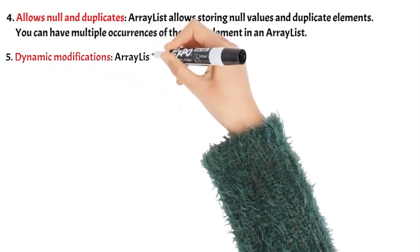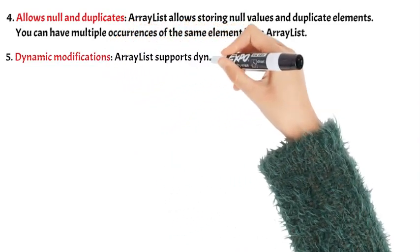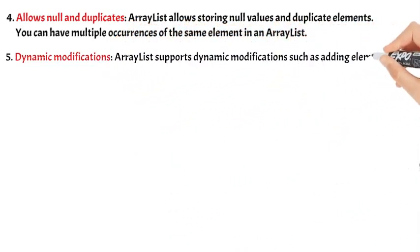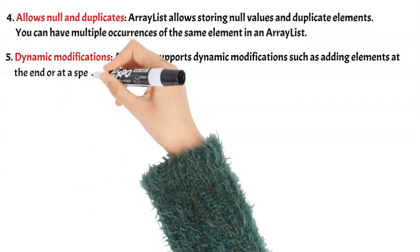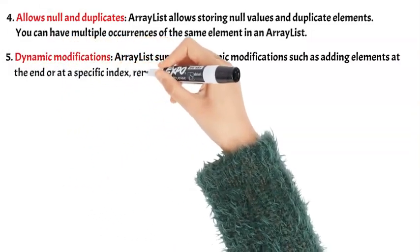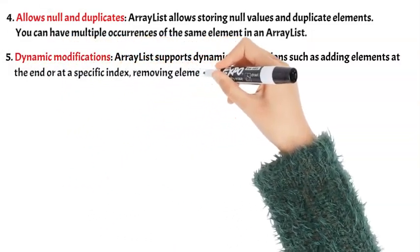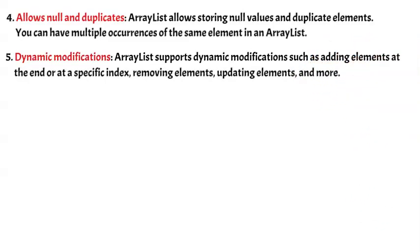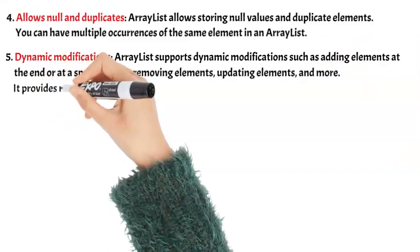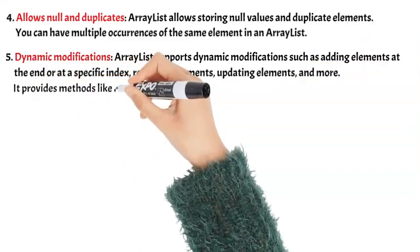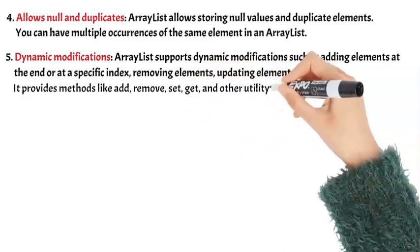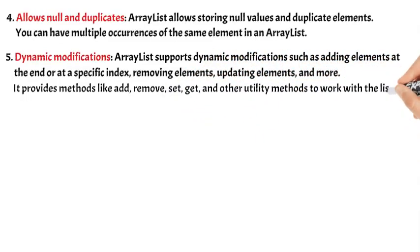Key feature 5: Dynamic Modifications — ArrayList supports dynamic modifications such as adding elements at the end or at a specific index, removing elements, updating elements, and more. It provides methods like add, remove, set, get, and other utility methods to work with the list.